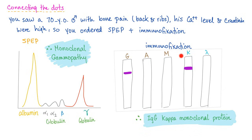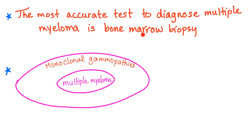We can't tell which subtype from electrophoresis alone — we need immunofixation. On immunofixation, we see bands in IgG and kappa light chain, giving us the diagnosis of IgG kappa monoclonal protein. Can we diagnose multiple myeloma? We are fairly confident, but the most accurate test is bone marrow biopsy showing an increased number of plasma cells. Remember: multiple myeloma is a subtype of monoclonal gammopathies, which also include MGUS, Waldenström macroglobulinemia, and others.